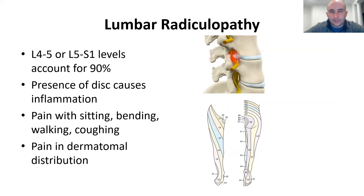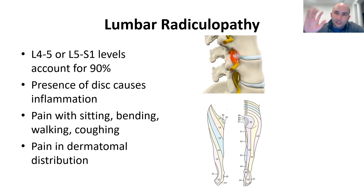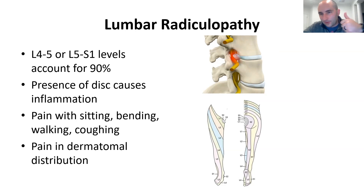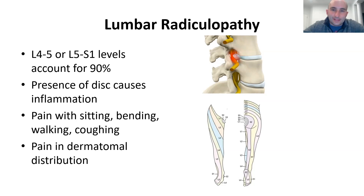Lumbar radiculopathy attributable to disc herniation most commonly occurs at L4-5 and L5-S1 — the bottom of the lumbar spine. There are two phases: the disc herniation and its inflammation cause the acute severe back pain, and then there's the shooting pain down the leg, which can be more long-standing and results from pressure on the nerve. The analogy I use for patients is getting your thumb stuck in a door — even after surgery removes the pressure, it still hurts and is still swollen.